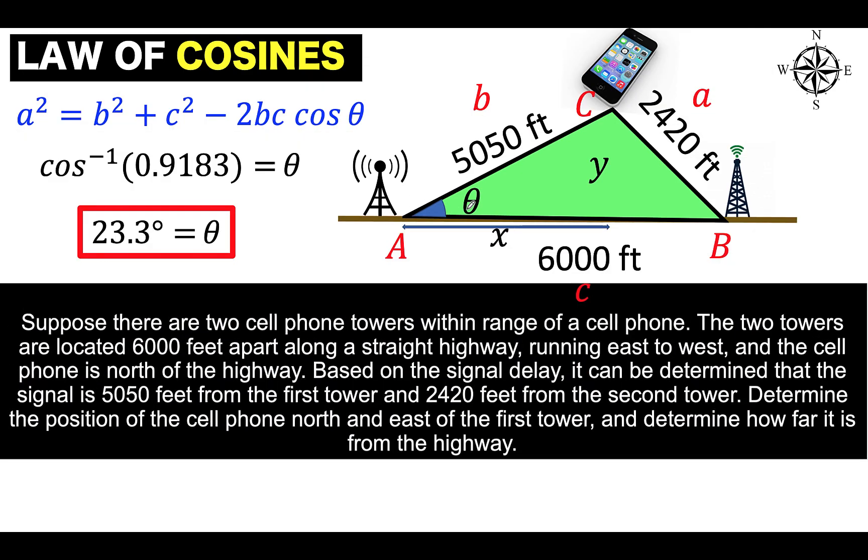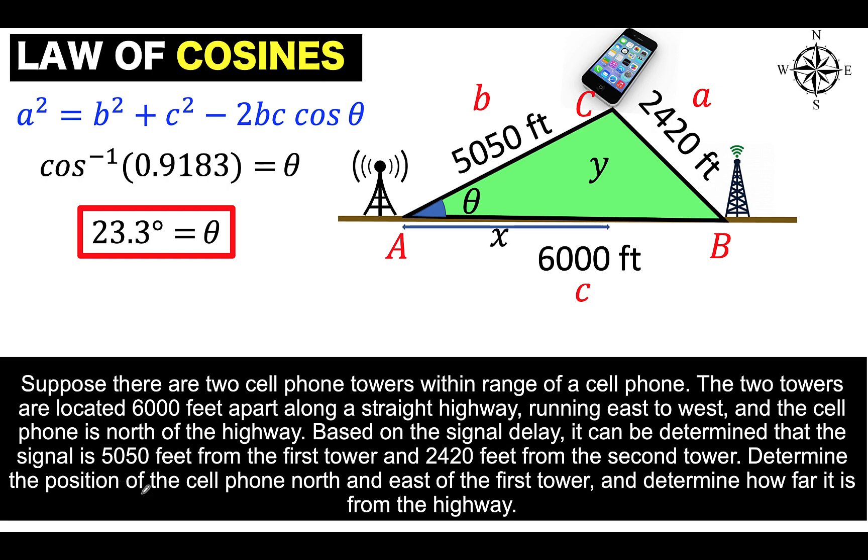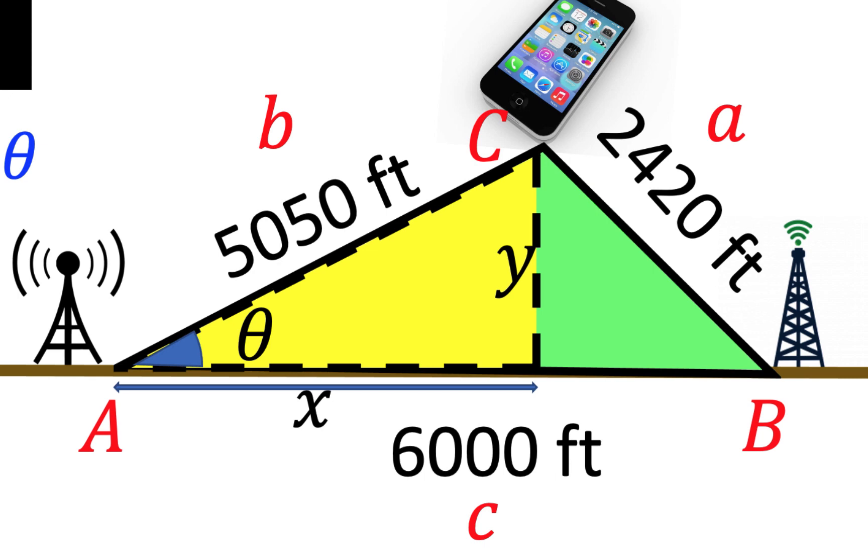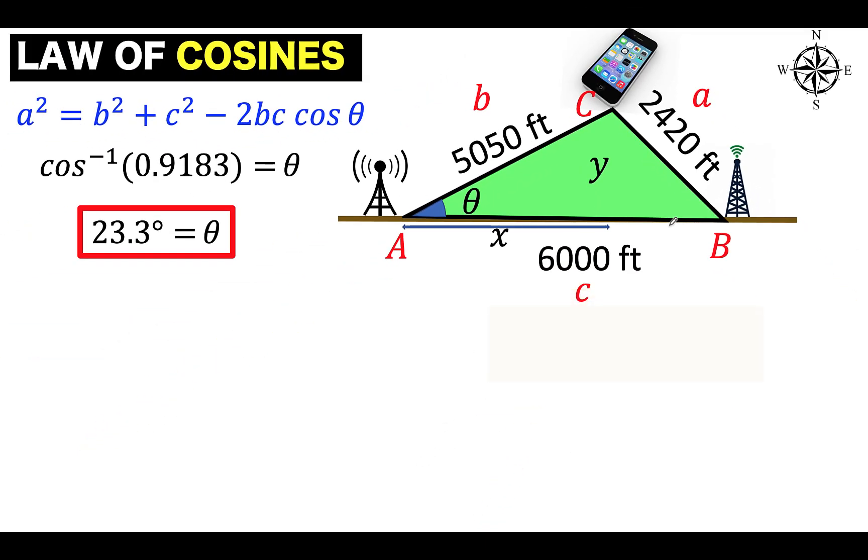Next is, going back to the problem, we want to know what is the position of the cell phone north and east of the tower. So we want to know what is the measure of this leg of this right triangle, which is denoted as x, and the other one is this vertical distance, which is denoted as y. And in here, remember that we now have a right triangle because we drop a perpendicular line segment from the cell phone going to the highway. And since we have a right triangle, we can use the right triangle trigonometry.